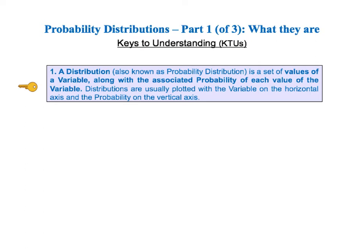As usual in the book and in these videos, we will go quickly through a list of keys to understanding in order to give you the overall picture. And then we will go into detailed explanations of each of the keys. For probability distributions, there are four keys to understanding. The first KTU is a distribution, also known as a probability distribution, is a set of values of a variable along with the associated probability of each value of the variable. The distributions are usually plotted with the variable on the horizontal axis and the probability on the vertical axis.